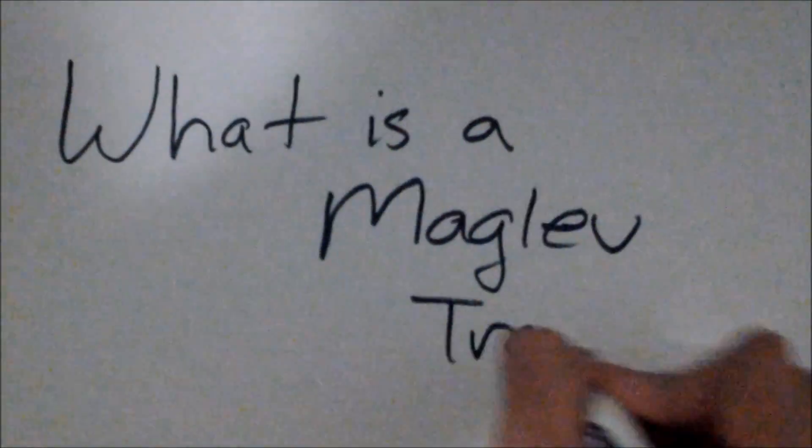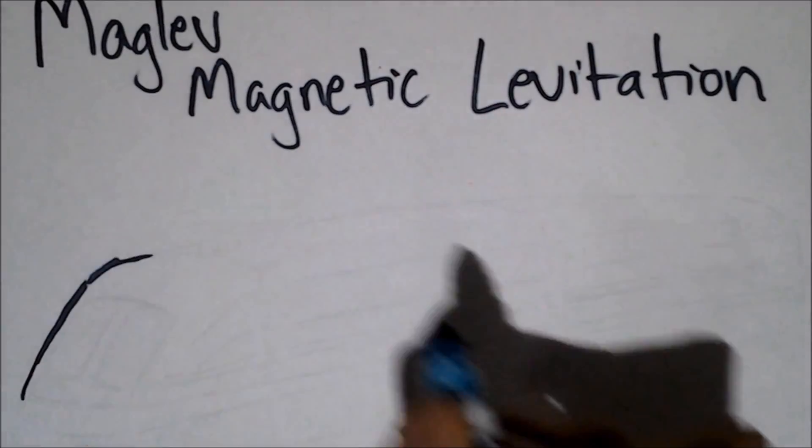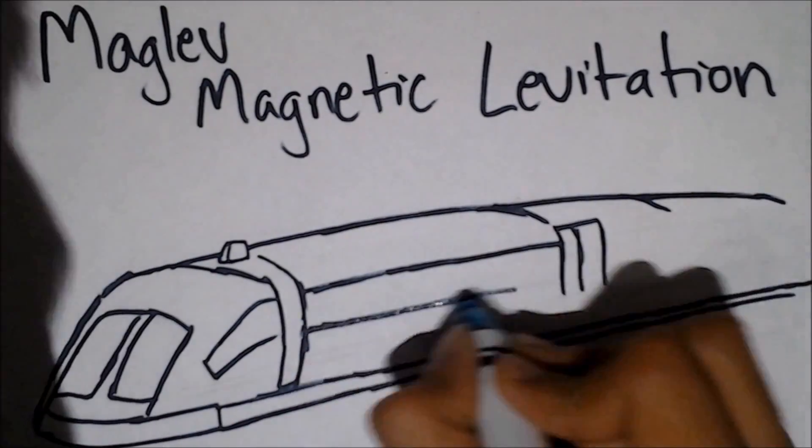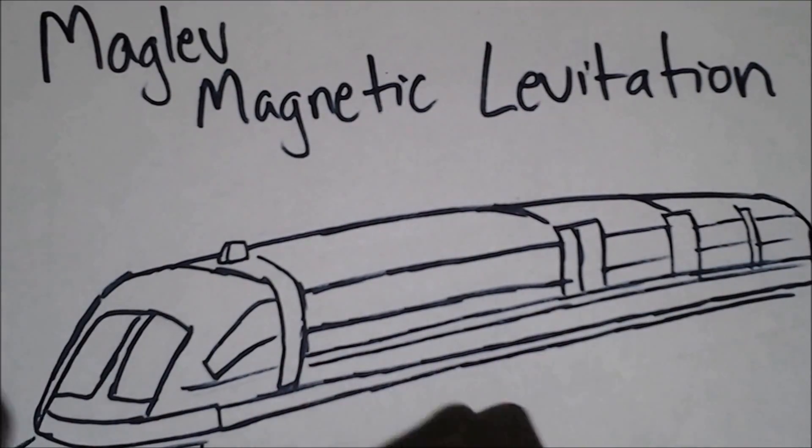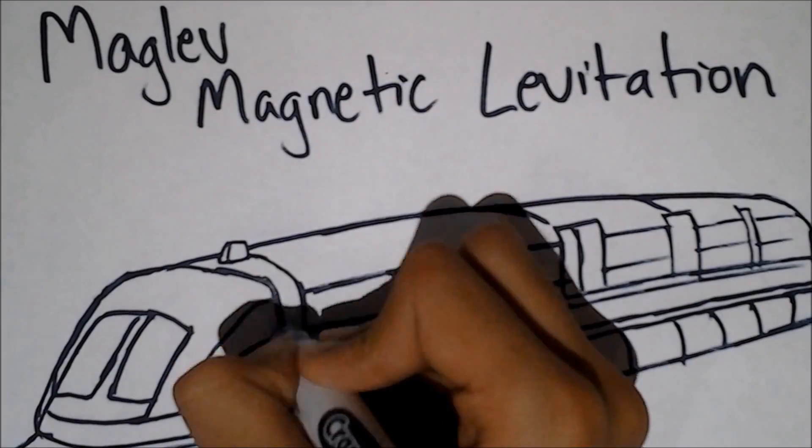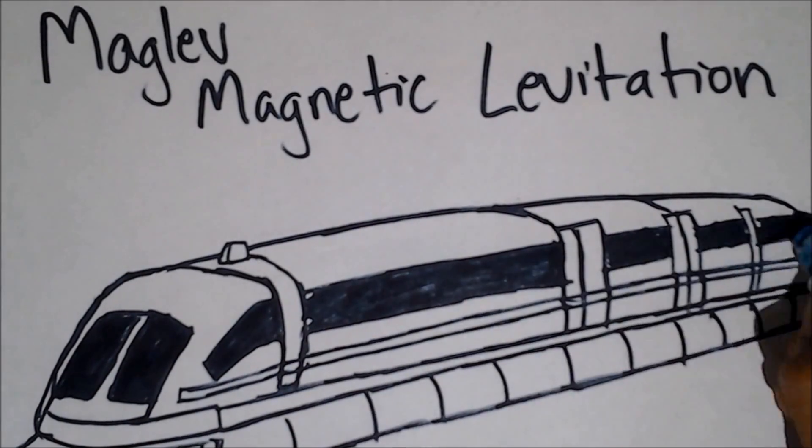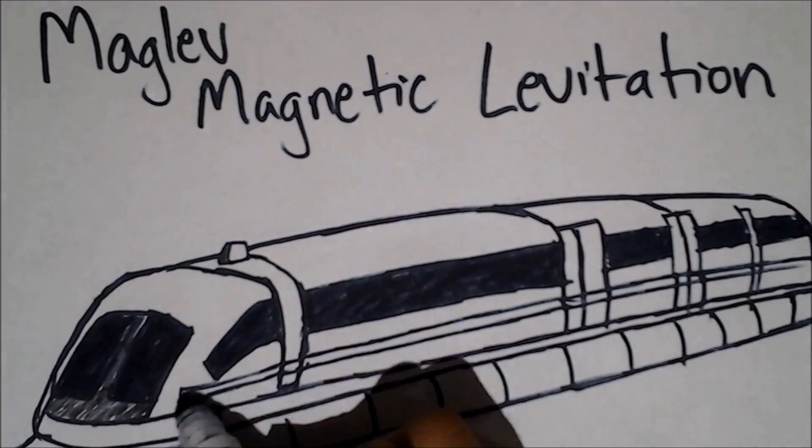What is a Maglev Train? First of all, Maglev stands for Magnetic Levitation. It is a train used to move people and objects from one place to another at a very fast speed. These types of trains use electromagnets producing a magnetic field.